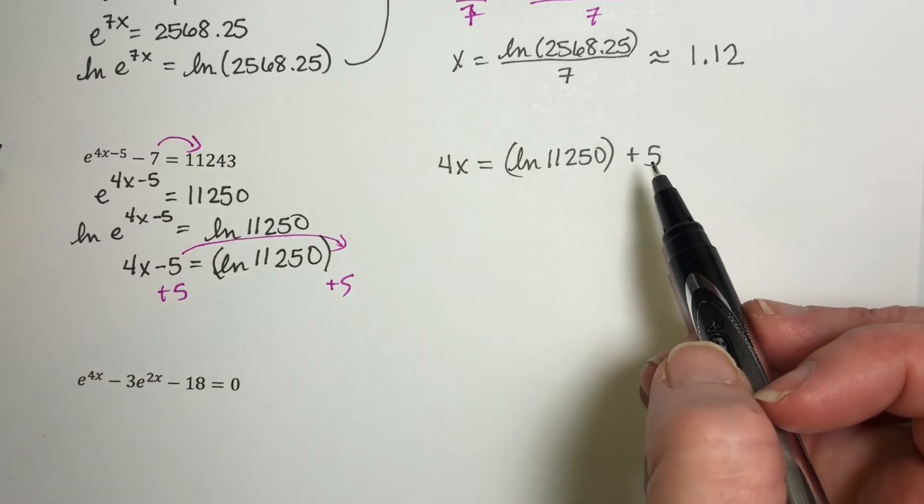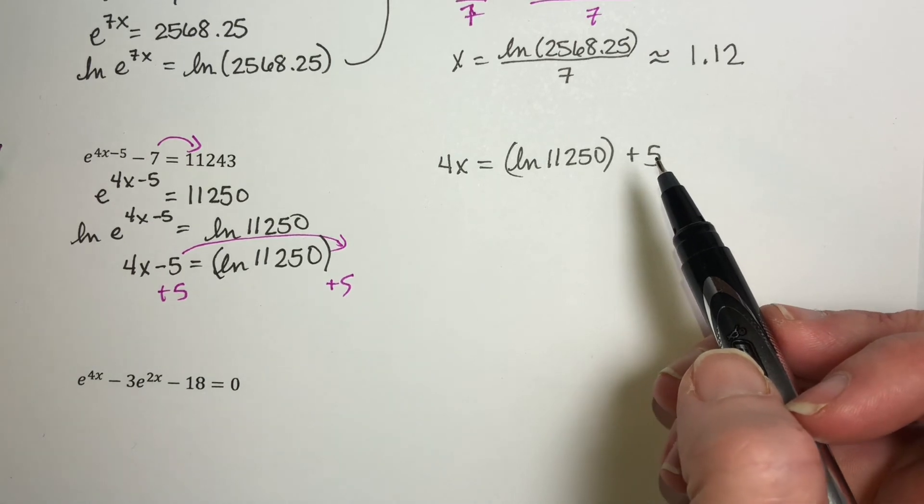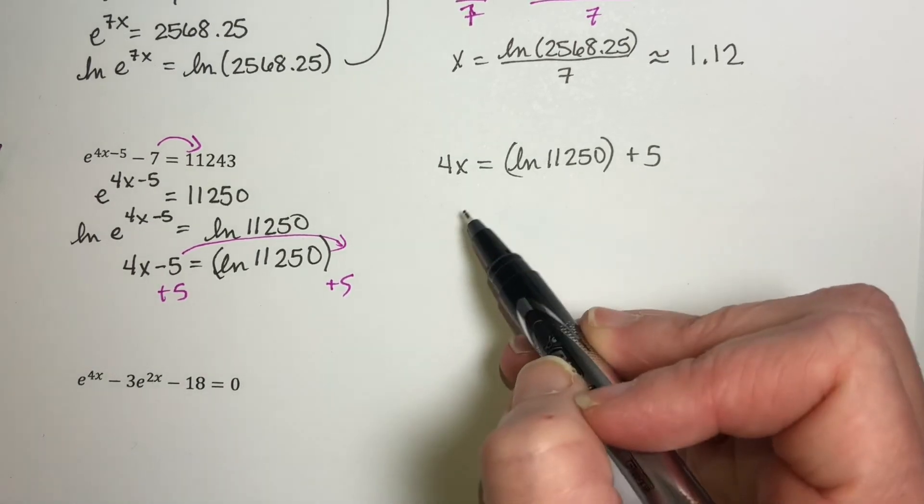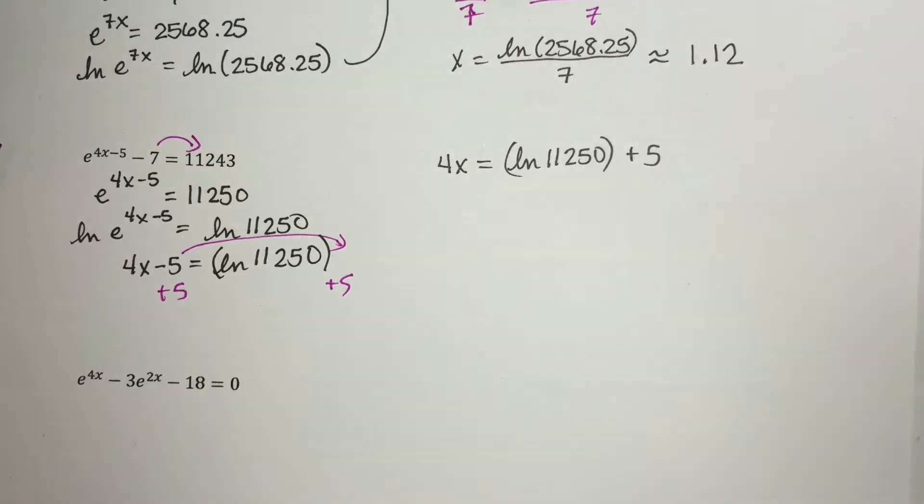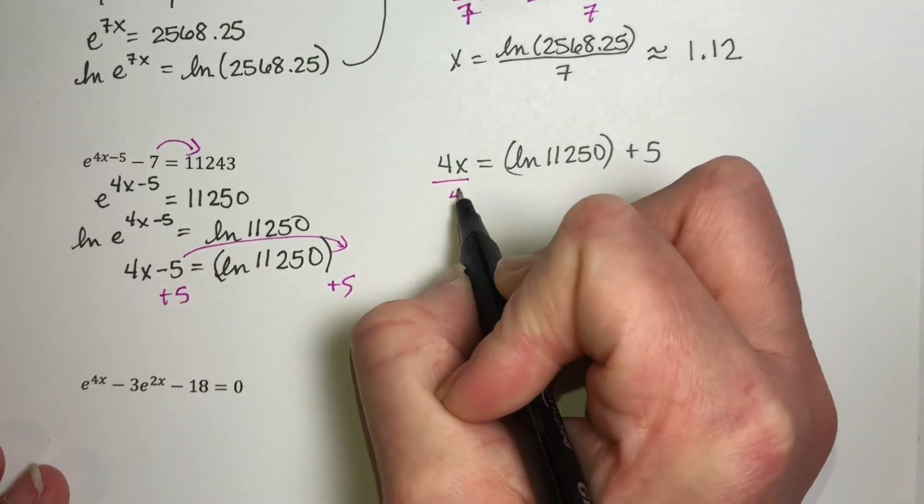This is kind of like when we were using the quadratic formula or we were using the square root property, and we just went ahead and moved everything over, and we didn't simplify completely until we had done all the algebra, and that's what we're doing here as well. Now I want the x alone, so I'm going to divide both sides by 4.